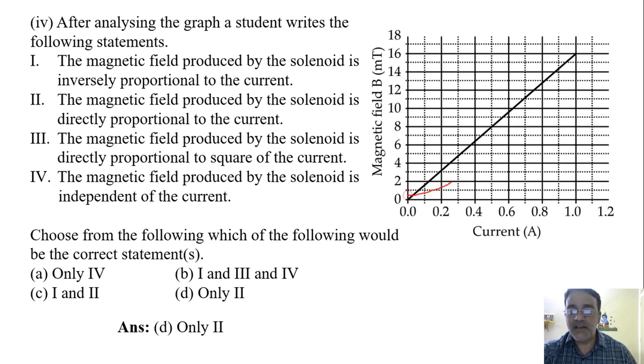The magnetic field produced by the solenoid is directly proportional to the square of the current. In the square of the current, there will be something like this, straight line. The magnetic field produced by the solenoid is independent of the current. Independent means constant, right? So the correct option here is the second option, means second one is correct, only II, that is D.